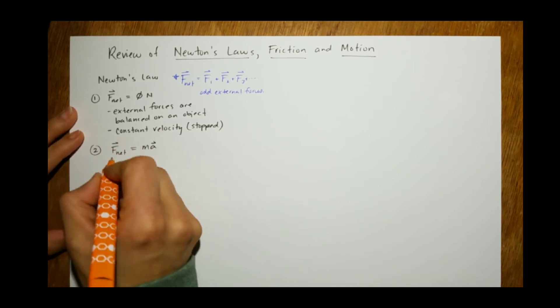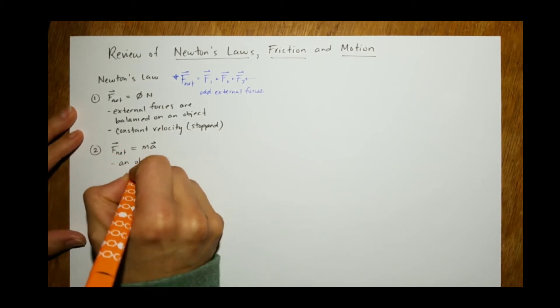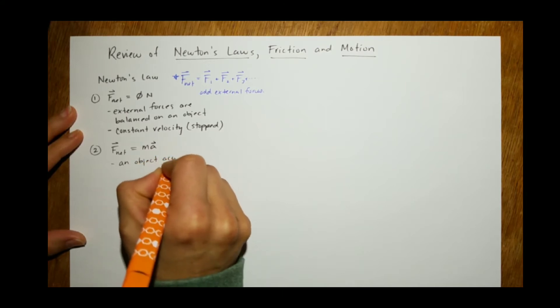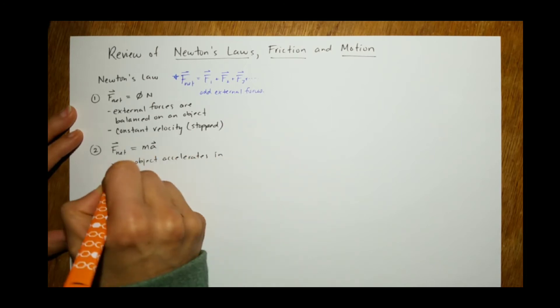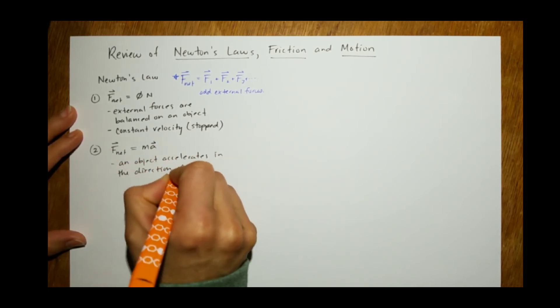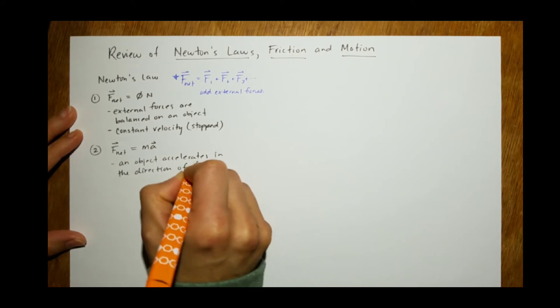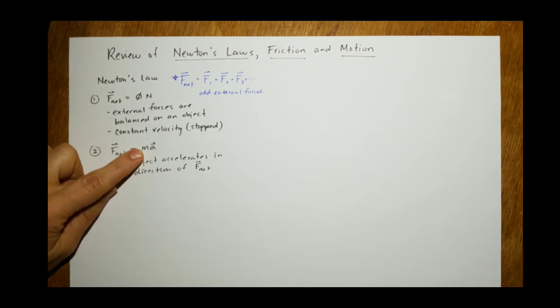So an object accelerates in the direction of F net, and that acceleration also depends on the mass.